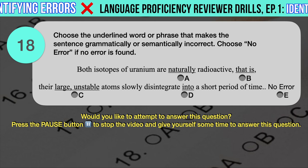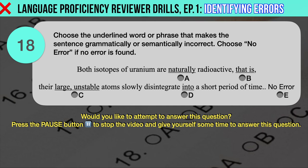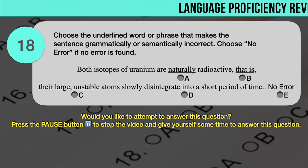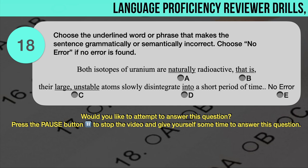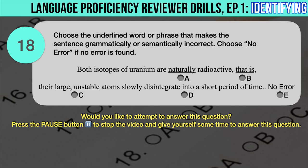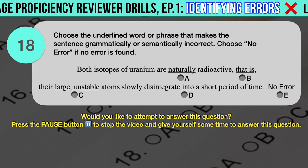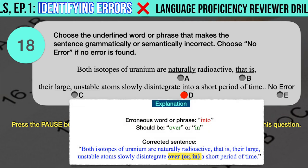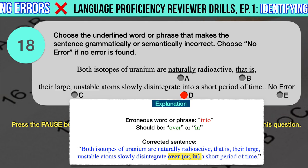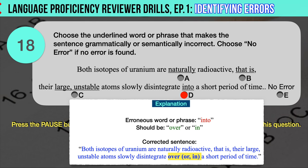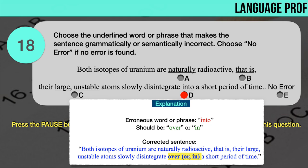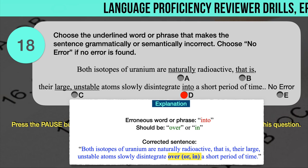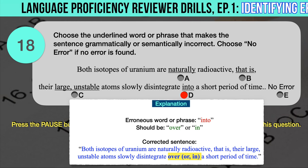Drill question number 18. 'Both isotopes of uranium are naturally radioactive, that is, their large, unstable atoms slowly disintegrate into a short period of time.' The underlined words are: A. Naturally, B. That is, C. Large, unstable, D. Into. The correct answer is D. 'Into' should have been 'over' or 'in.' Between the two, 'over' seems the better option. Correct sentence: Both isotopes of uranium are naturally radioactive, that is, their large, unstable atoms slowly disintegrate over, or in, a short period of time.